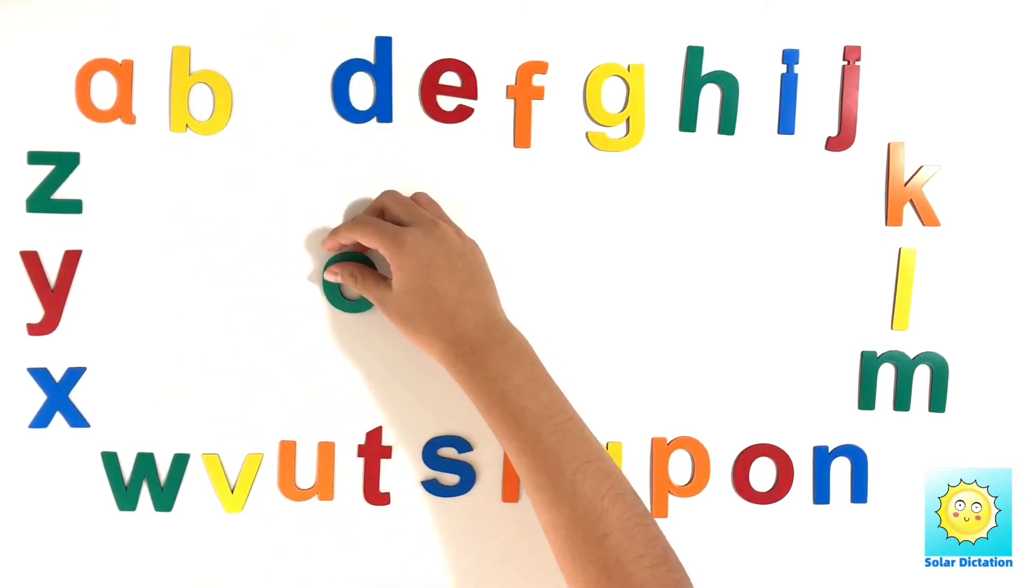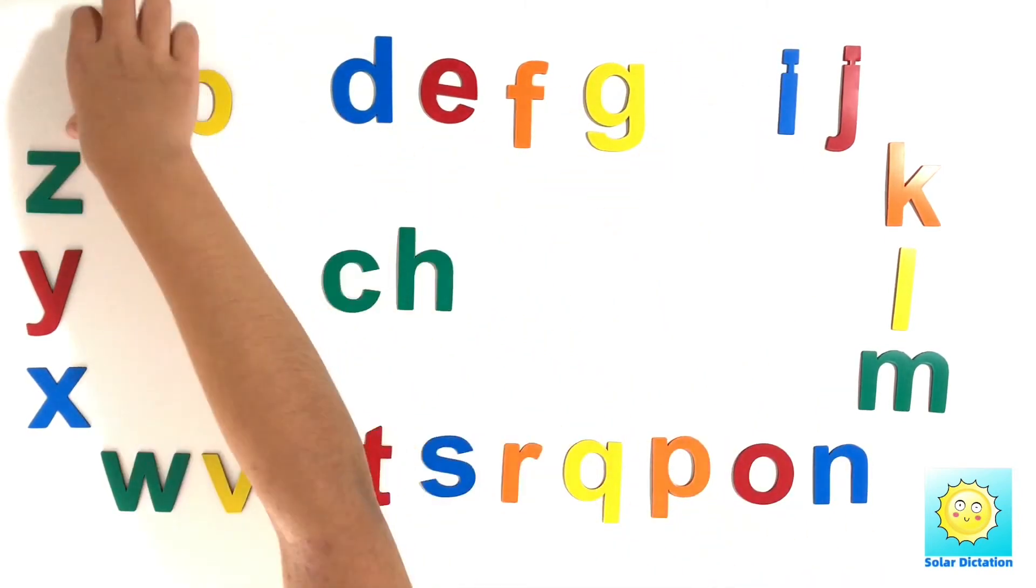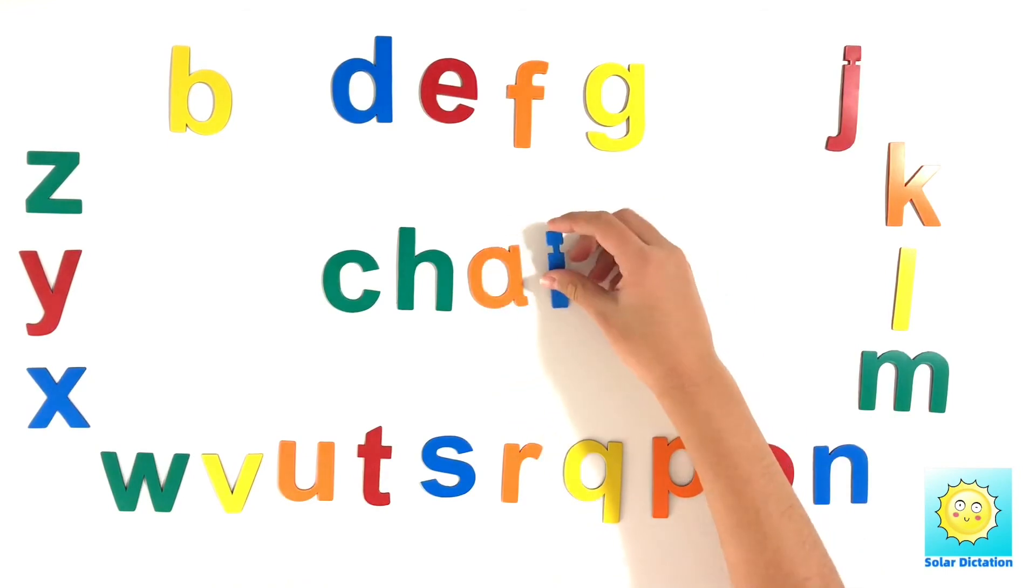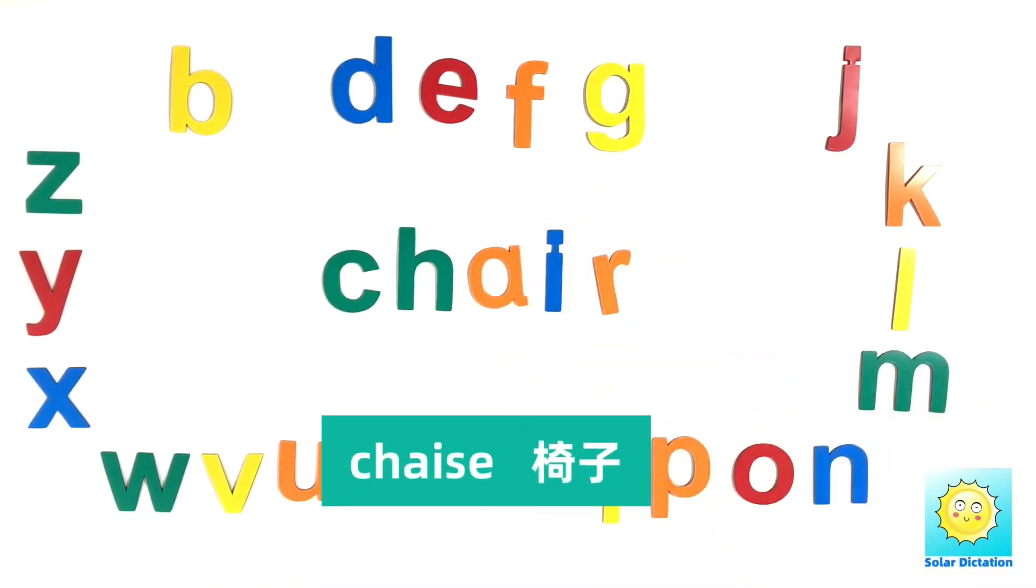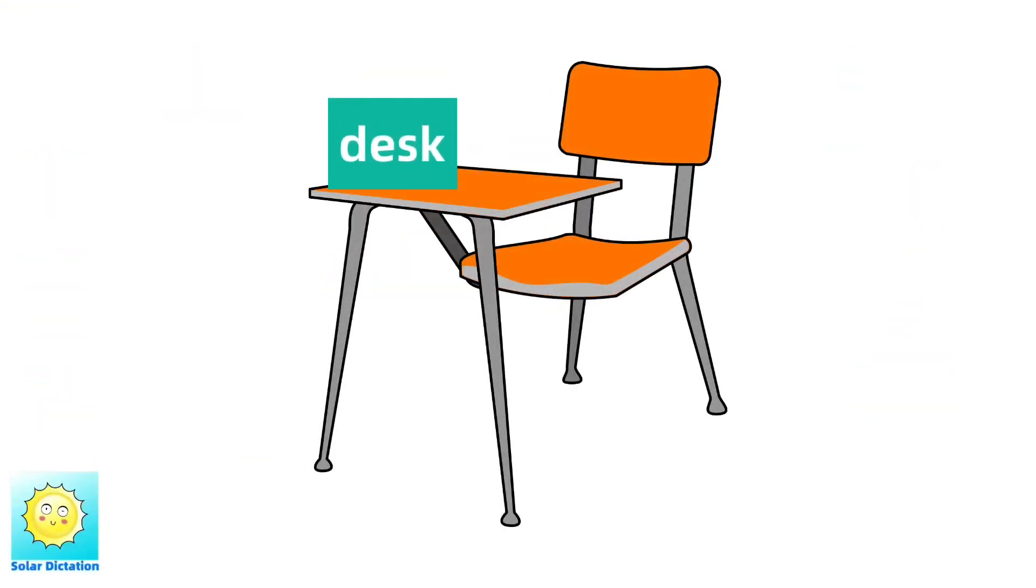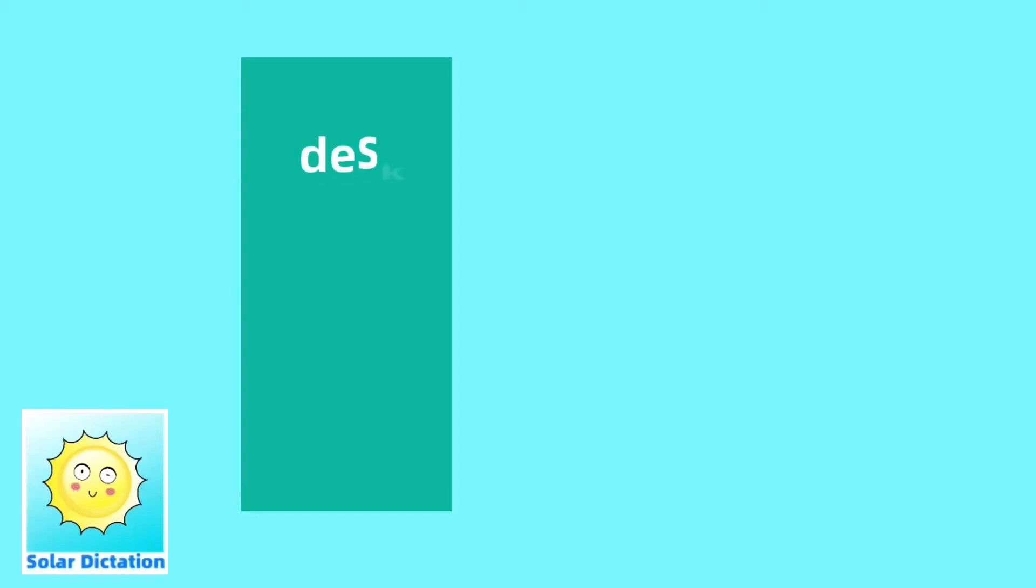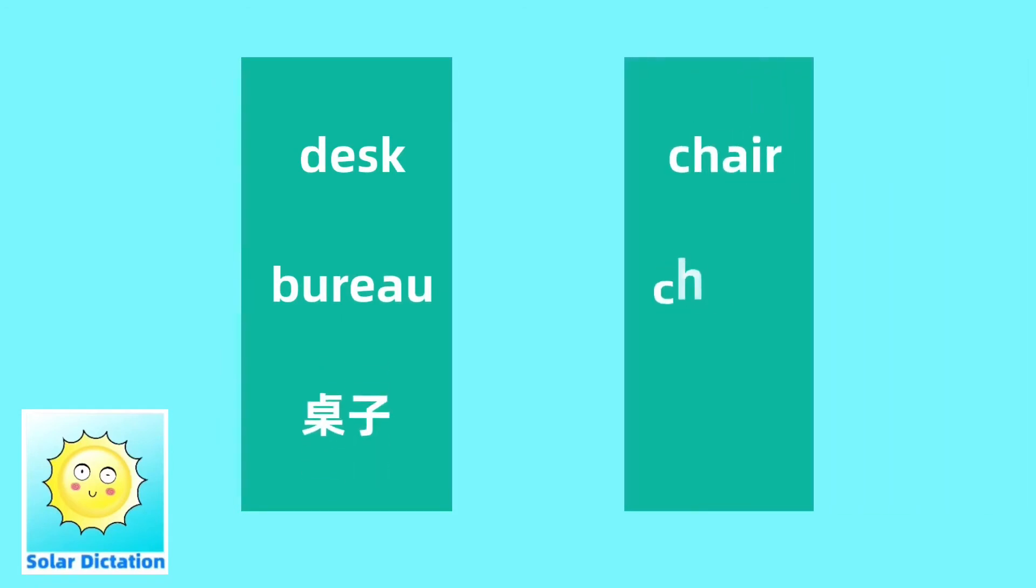C, H, A, I, R. Chair, 椅子. Desk, 桌子. Chair, 椅子.